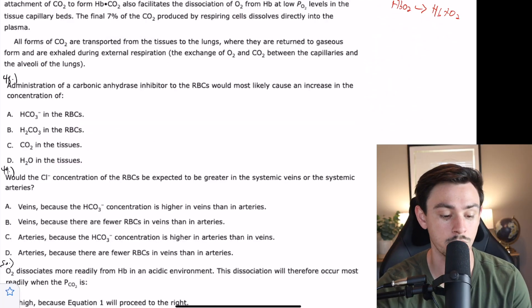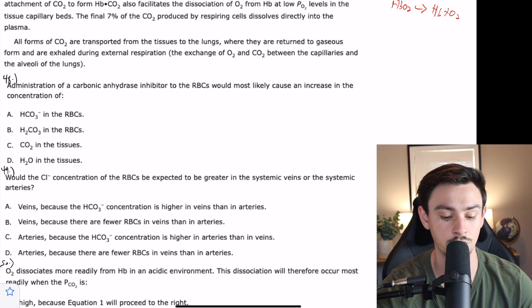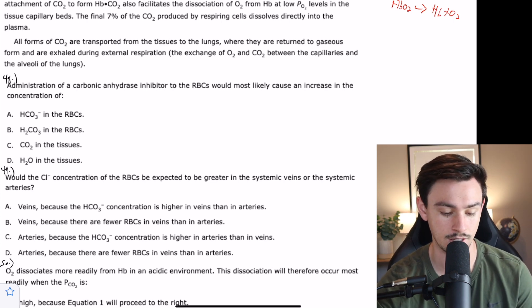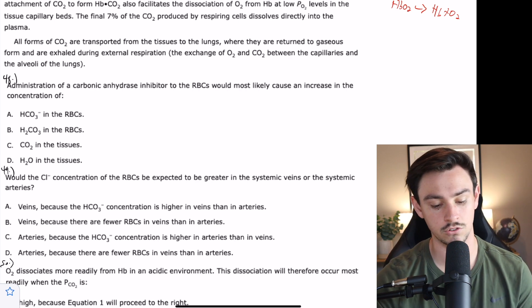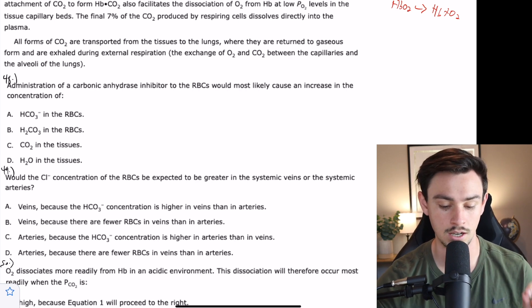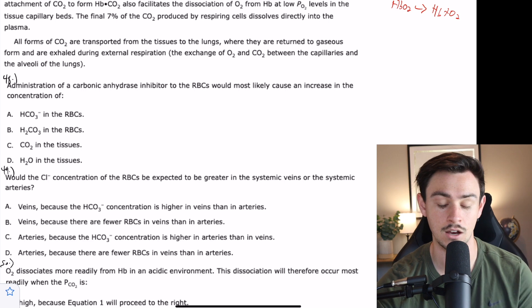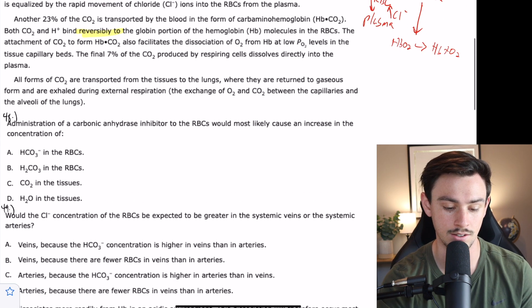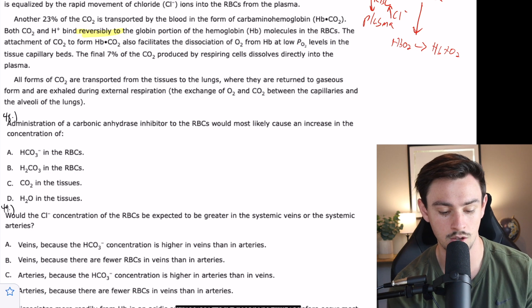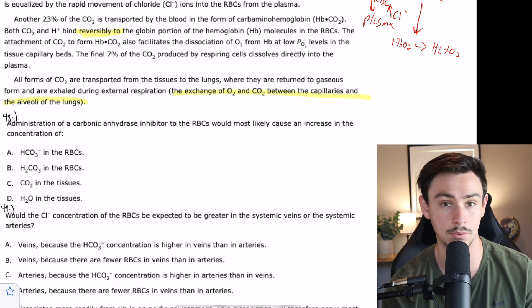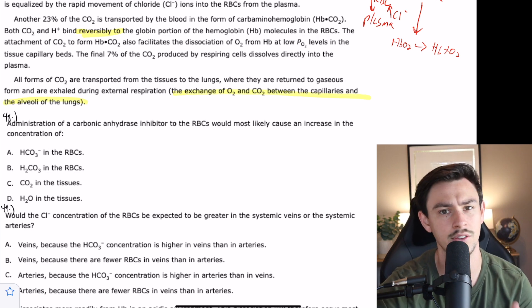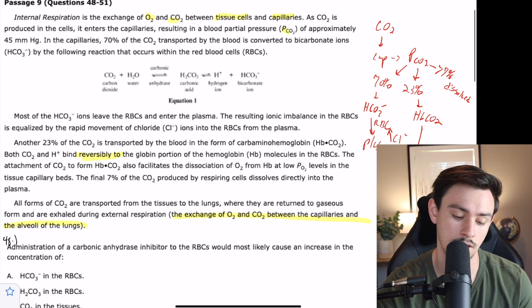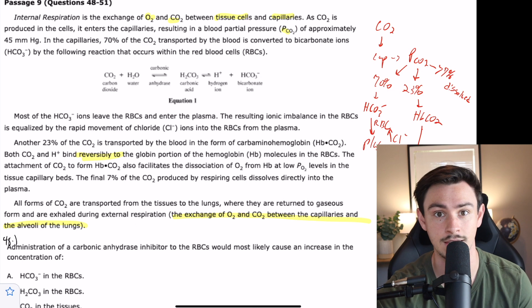All forms of CO2 are transported from the tissues to the lungs where they are returned to gaseous form and exhaled during external respiration, the exchange of oxygen and carbon dioxide between the capillaries and alveoli of the lungs. So you've got a pretty involved flow chart. Let's see how we can use it and get all these answers correct.